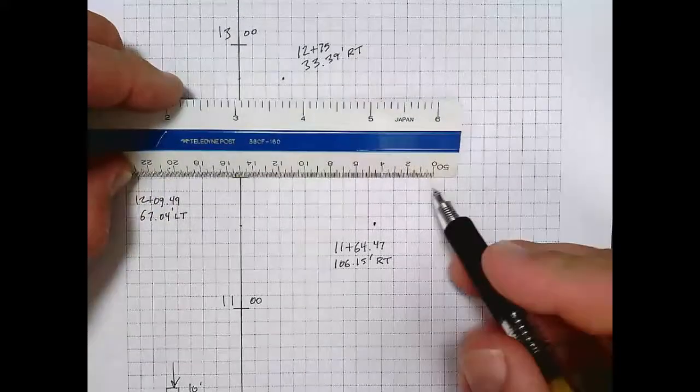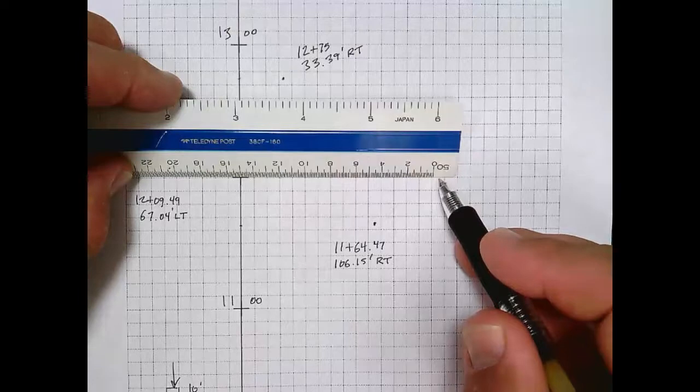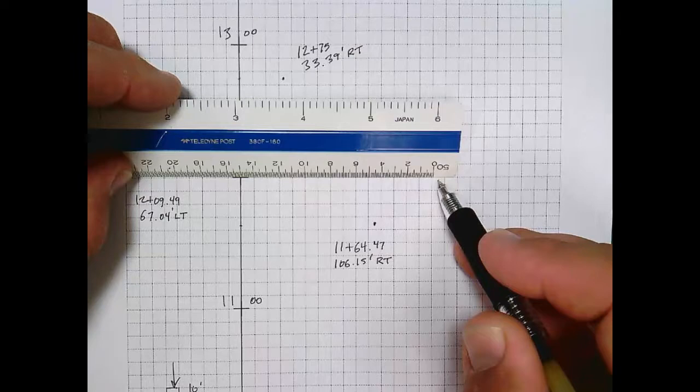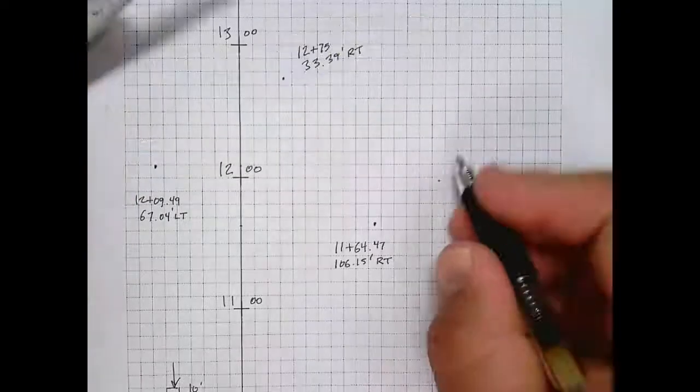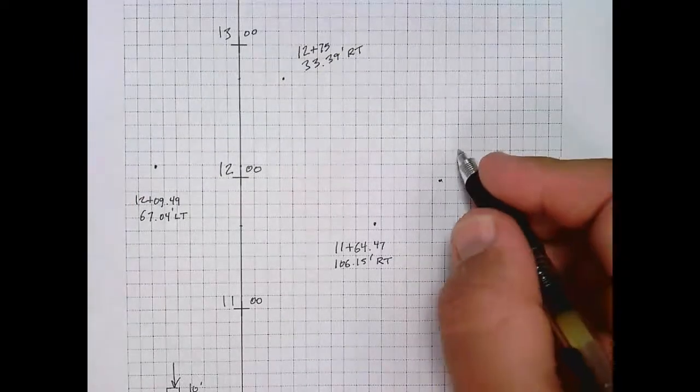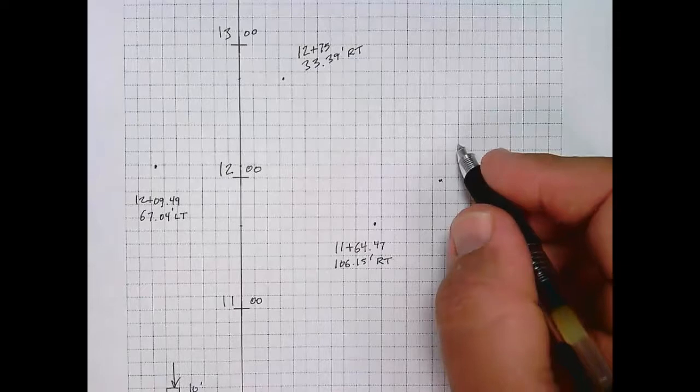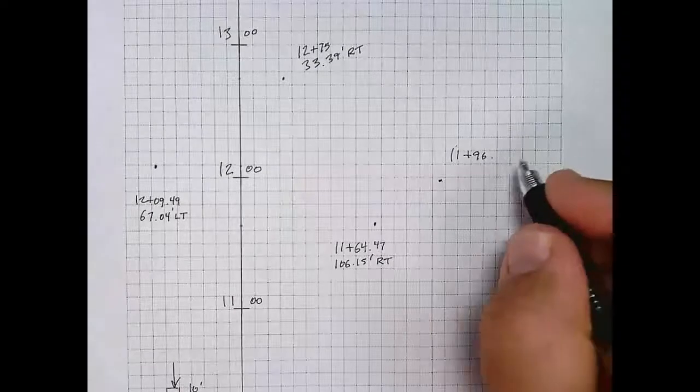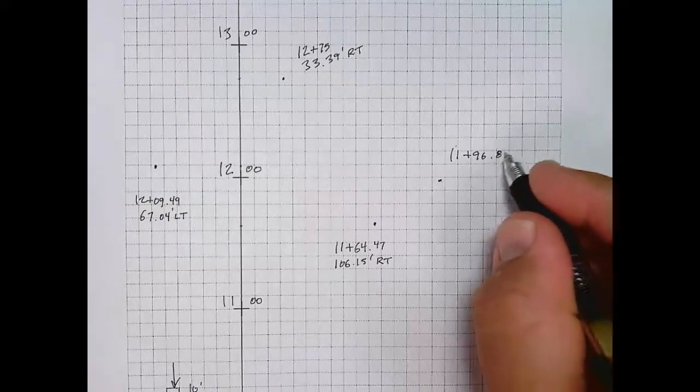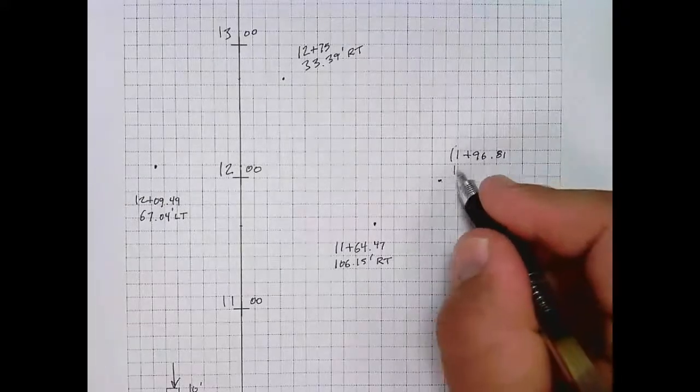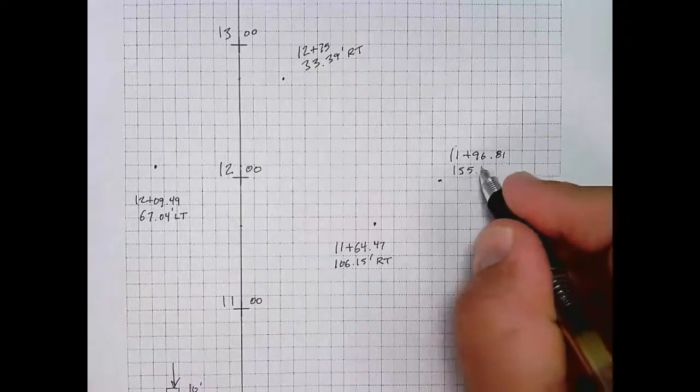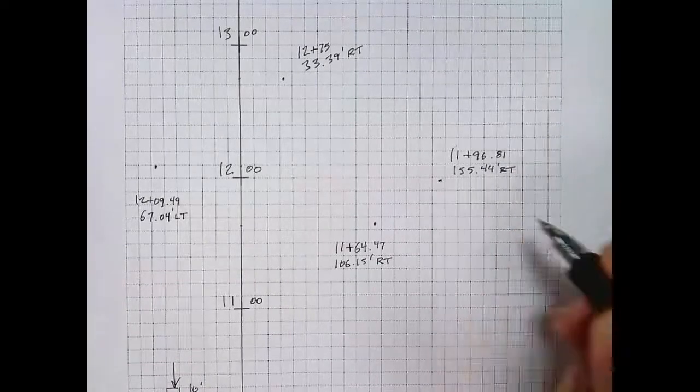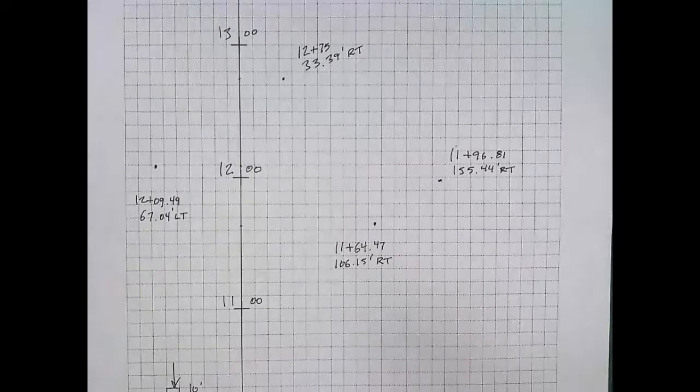Now when I plot point five, I'm very nearly station 12 plus 00. It's more precisely 11 plus 96.81 feet, and then my offset is 155.44 feet to the right. So given the way this is shaping up, we can pretty much expect that going from point three to point four to point five forms the inside of the L of this L-shaped building.